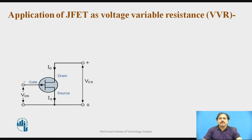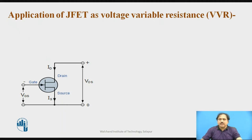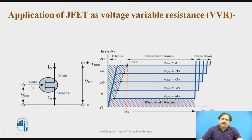We apply a battery between drain and source, which is the voltage VDS, and we apply a voltage from gate to source, which is VGS. We are going to plot the drain characteristics for the given JFET by keeping VDS constant while supplying voltage from gate to source in the reverse bias direction.